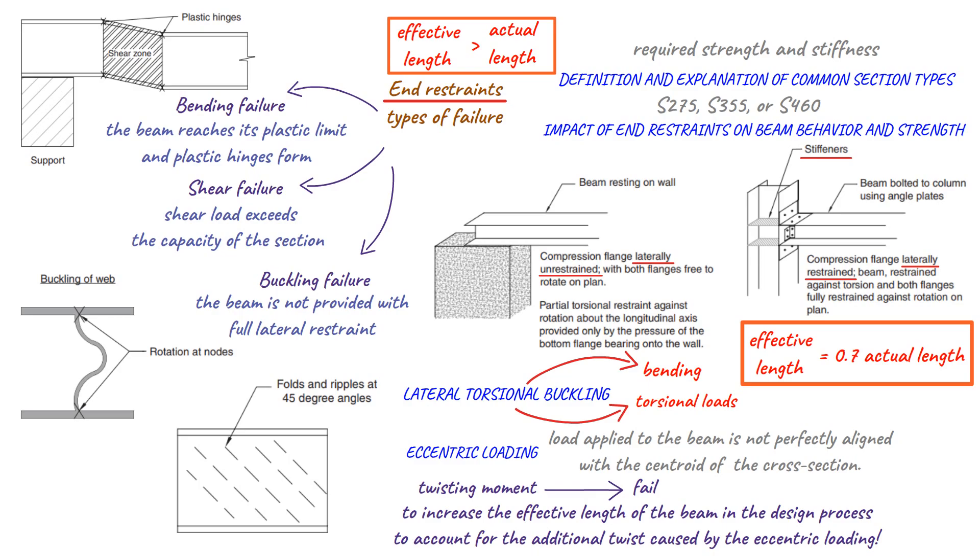In conclusion, the impact of end restraints on steel beam strength is significant and must be carefully considered during the design process. Lateral restraints play a vital role in preventing lateral torsional buckling and beam twist caused by eccentric loading.